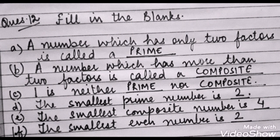B part: a number which has more than 2 factors is called a composite number. C part: 1 is neither prime nor a composite number.